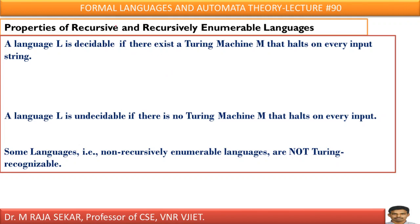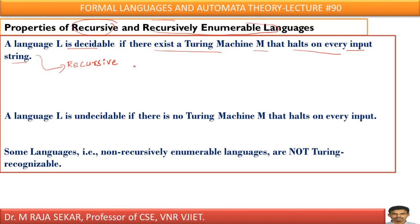I already defined what is recursive language and what is recursively enumerable language in my previous lecture. A language L is decidable if there exists a Turing machine M that halts on every input string. This is related to recursive language. By this definition, I can say recursive language is decidable.